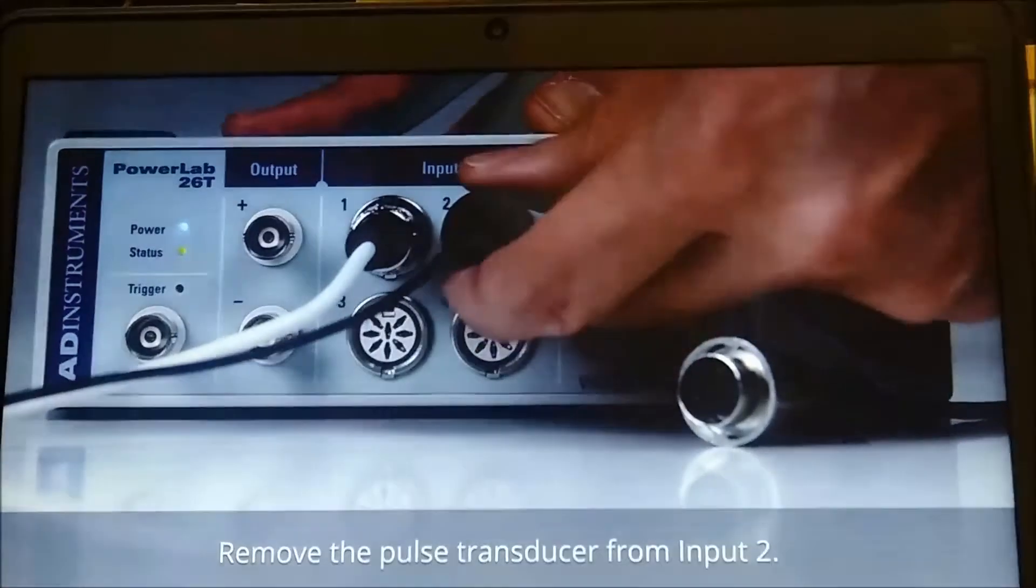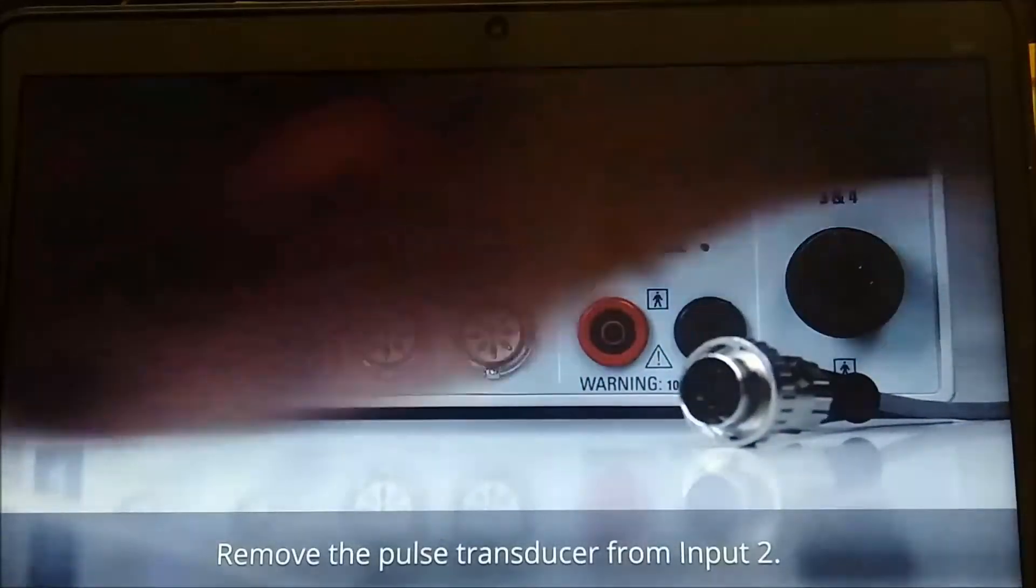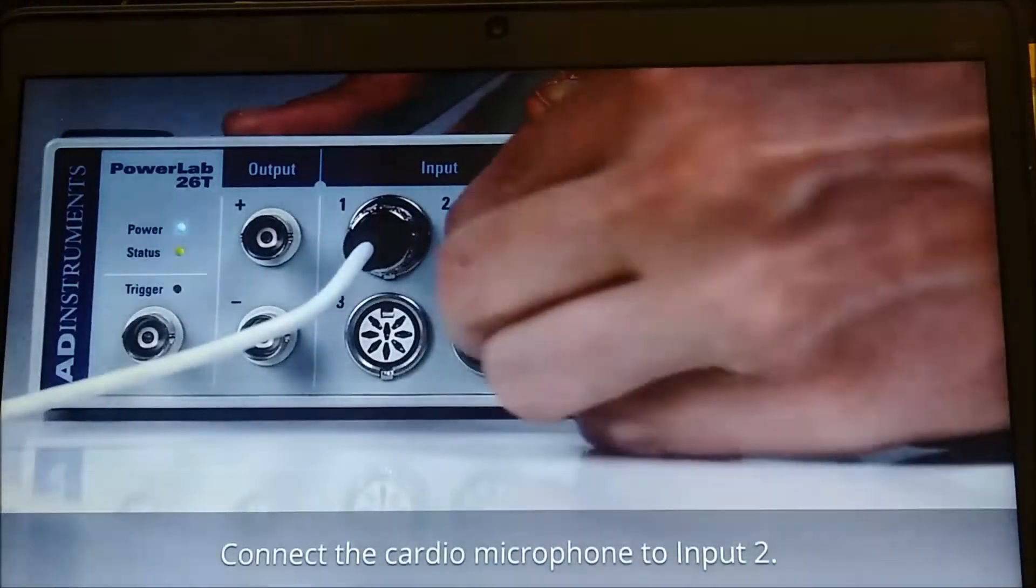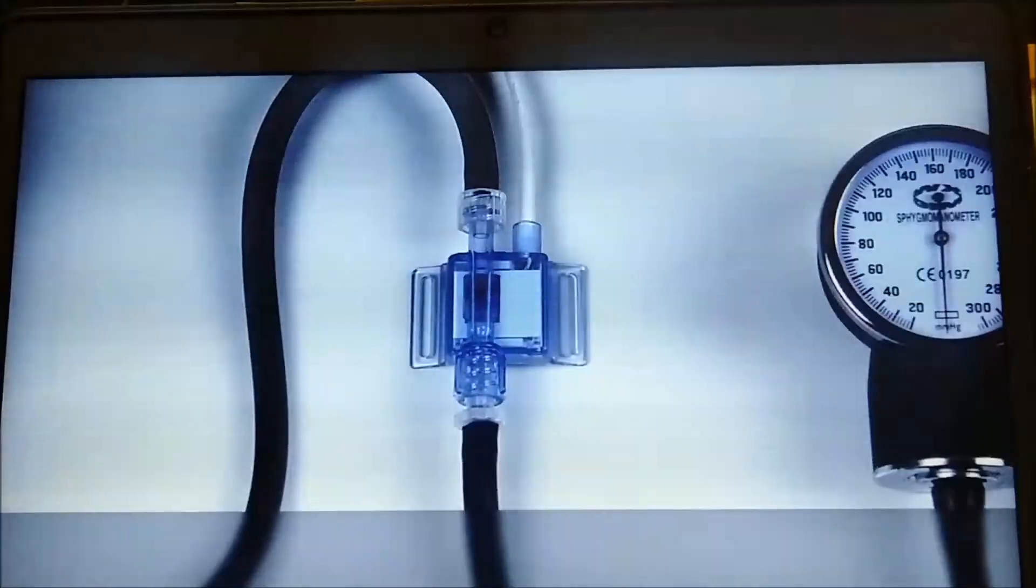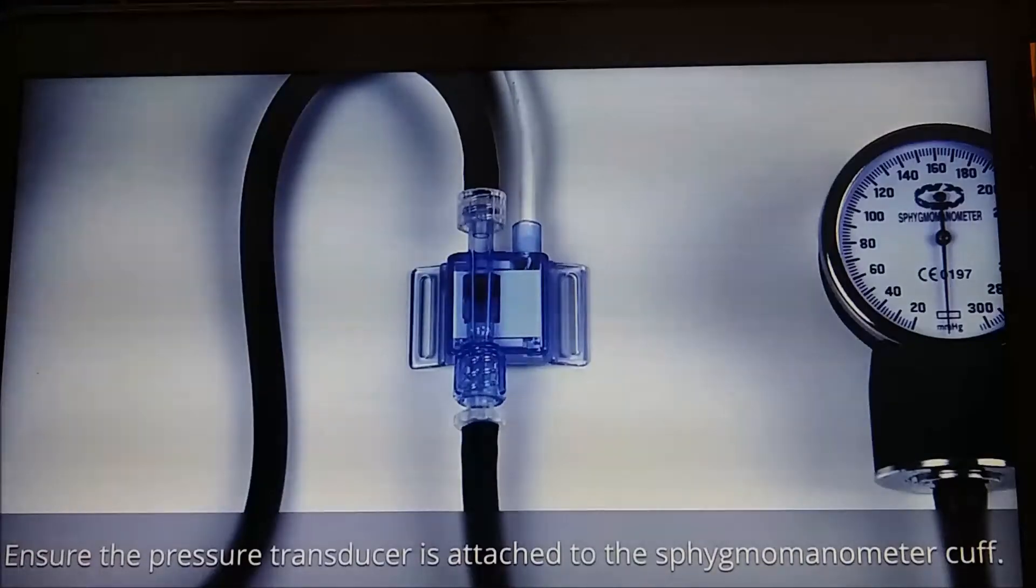Remove the pulse transducer from input 2. Connect the cardio microphone to input 2. Ensure the pressure transducer is attached to the sphygmomanometer cuff.